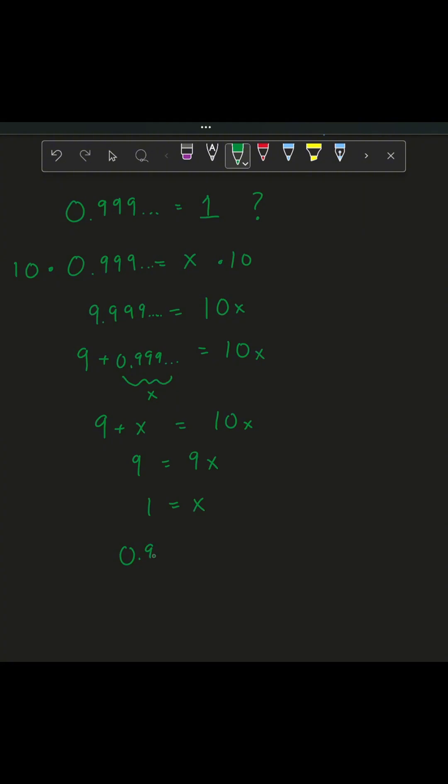And so there you have it, our 0.999 repeating. That's the same as x, which is also the same as 1. So those two are equal.